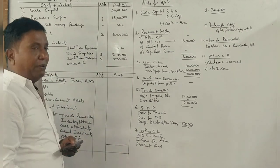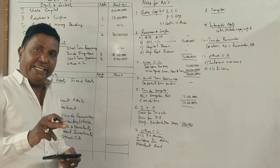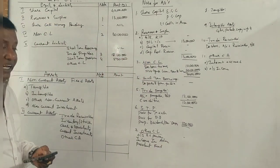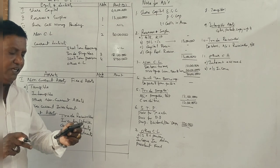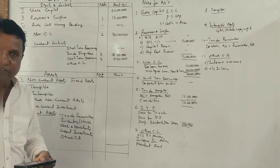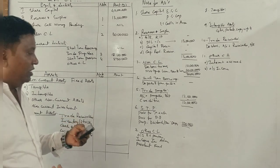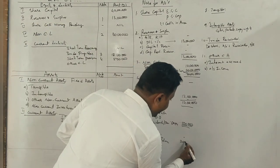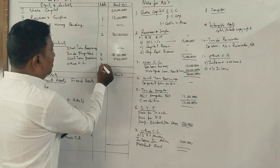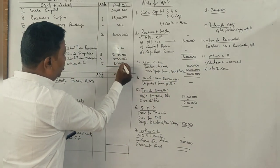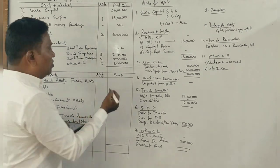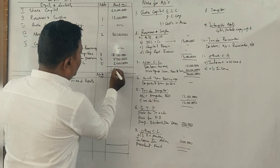Other current liabilities include outstanding expenses and income received in advance — revenue received in advance is 2 lakhs. The total for other current liabilities is 2 lakhs. The total balance sheet stands at 1 crore 2 lakhs.